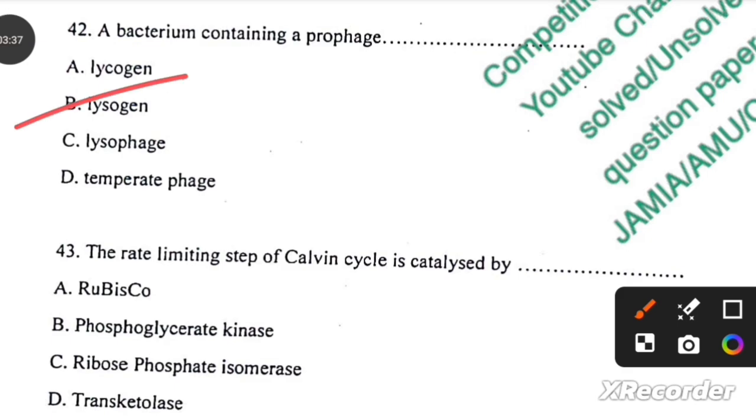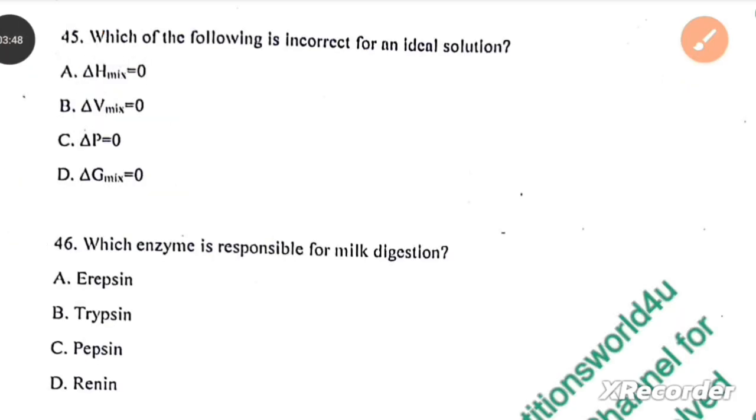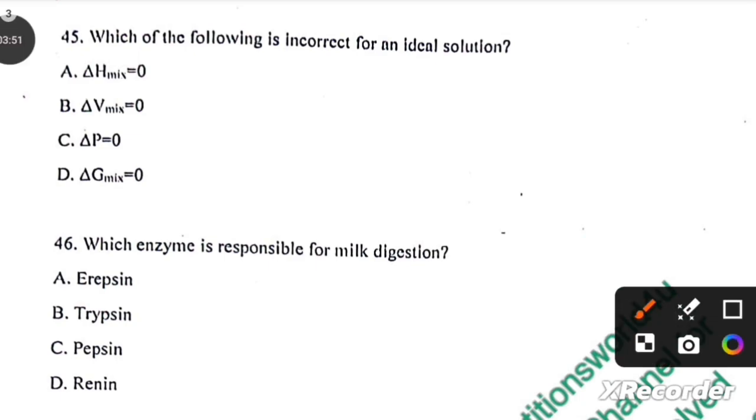The rate limiting step of Calvin cycle is catalyzed by Rubisco. The second highest proportion of gas in the sun is that of helium. Which of the following is incorrect for an ideal solution? Delta V mix = 0, option D. Which enzyme is responsible for milk digestion? Pepsin.